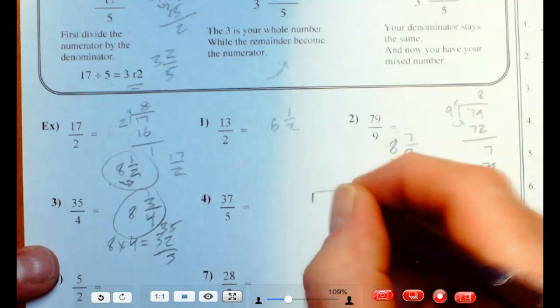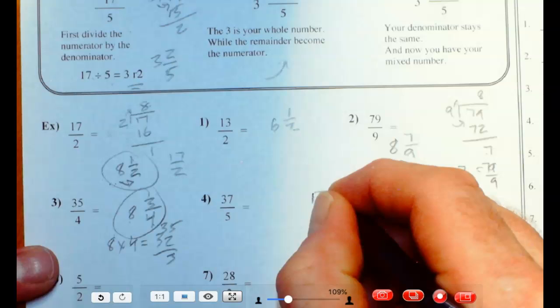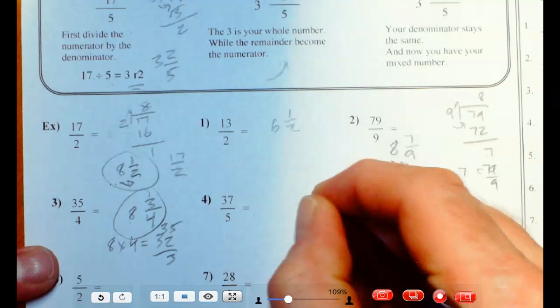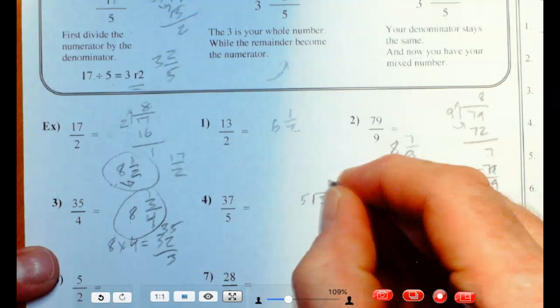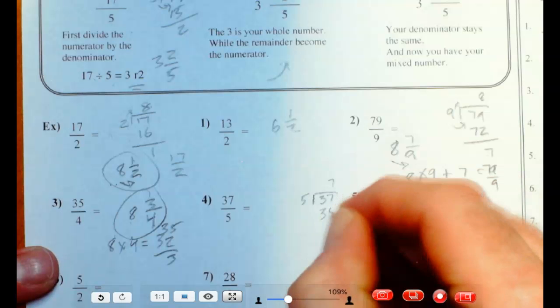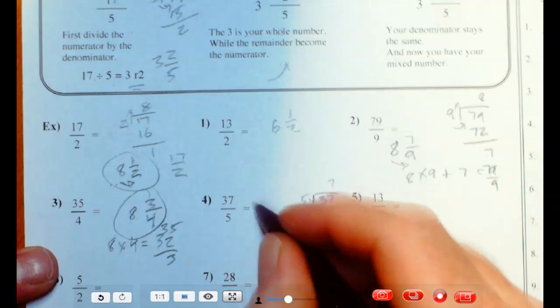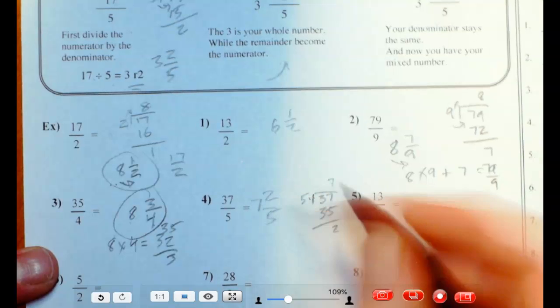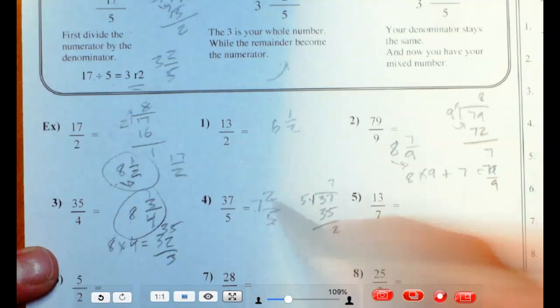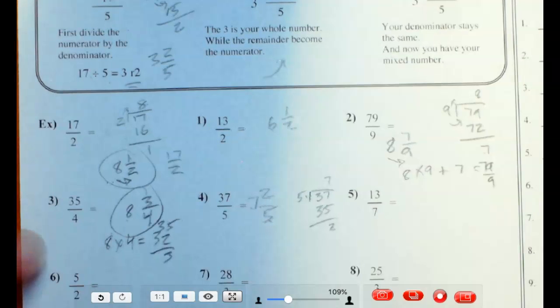I'll do this the old way. 37 divided by 5. It goes in there 7 times. That's 35. You've got 2 left over. So here's your answer. It's 7 and 2 fifths. Double check. 7 times 5 is 35. Plus 2 is 37. All right.